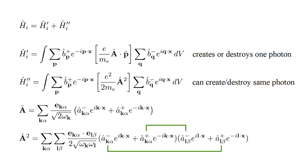A-hat-squared contains products of a destruction operator for a photon in the state k-alpha with a creation operator for a state l-beta, or a creation operator for a photon in the state k-alpha with a destruction operator for a state l-beta. If k-alpha and l-beta are the same state, then h-hat i-double-prime can create and destroy the same photon. Let's call these terms in a-hat-squared a-hat self-squared.